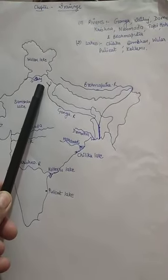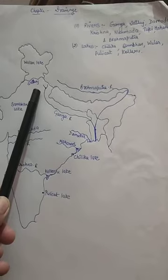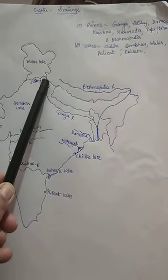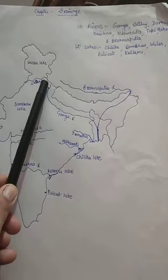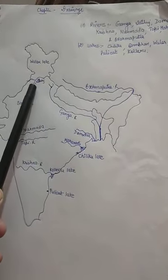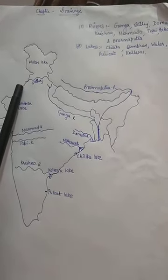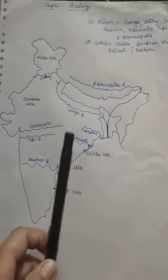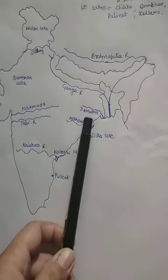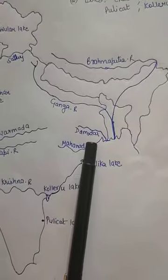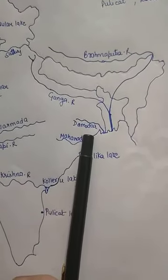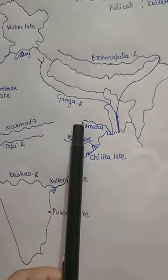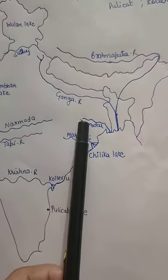The Satluj river rises from Himachal Pradesh and then flows into Pakistan. Next is the third river, Damodar. Basically, the Damodar river rises from Jharkhand and then flows through West Bengal.